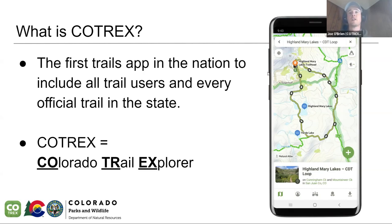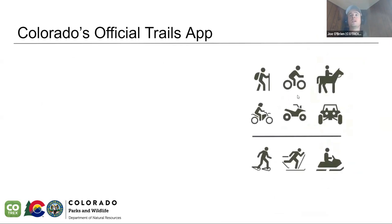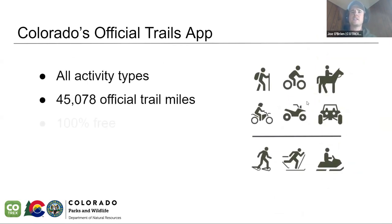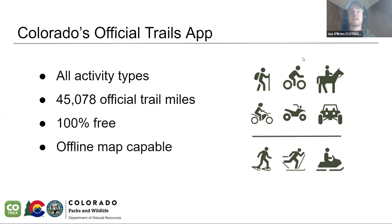COTREX stands for Colorado Trail Explorer. At a high level, it has all activity types: hiking, biking, equestrian, dirt bike riding, four-by-four, side-by-sides, as well as three winter activity types — snowshoeing, cross-country skiing, and snowmobiling. We have over 45,000 miles of official trail across the state. It's 100% free — for an account, for anything we offer. Last year we launched a set of features that allow management agencies to post official advisories, closures, and notices related to trails or open spaces, and that's free to them as well.